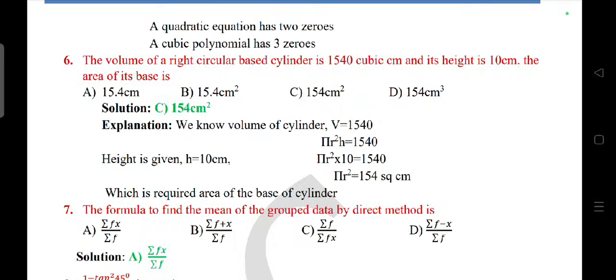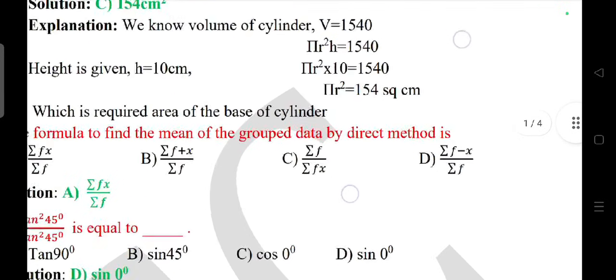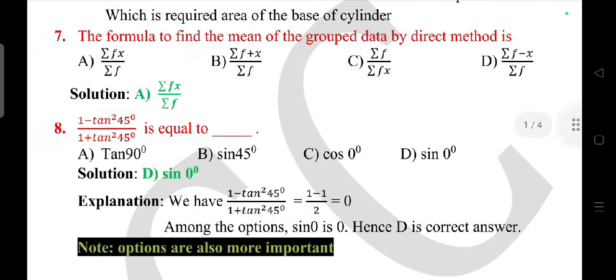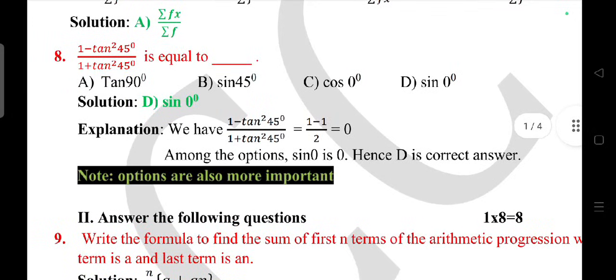Write the formula to find the mean of the group data: answer is A, sigma fx divided by sigma f. Question number 8: 1 minus tan square 45 degree divided by 1 plus tan square 45 degree is equal to answer 0, sin 0 degree.